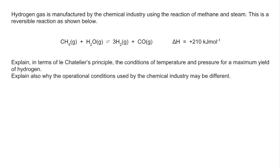In this video I'm looking at the equilibrium question from the 2017 paper 1. So there's the first part of the question, we're given an equilibrium for the manufacture of hydrogen and we've got to explain in terms of Le Chatelier's principle, conditions of temperature and pressure for a maximum yield and also then explain why operational conditions used by the chemical industry may be different.